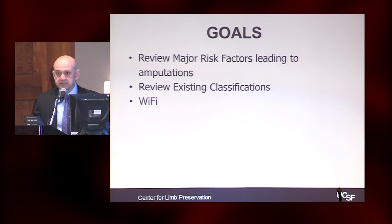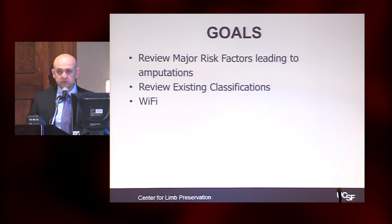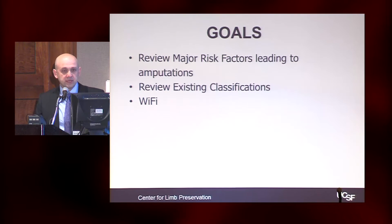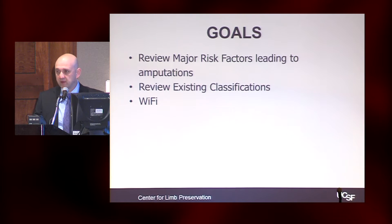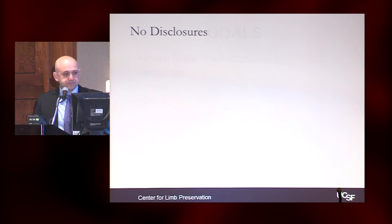The goal of the talk is to discuss and review major risk factors leading to amputations, review existing classification systems, and then finish off with the WIfI classification system. I have no disclosures for this talk.